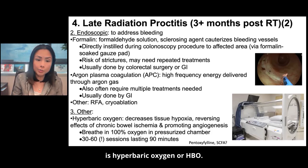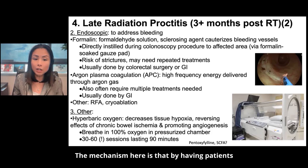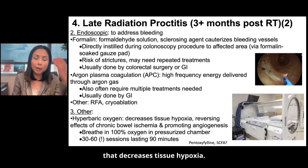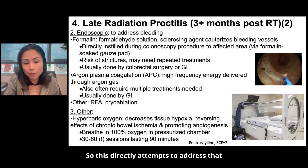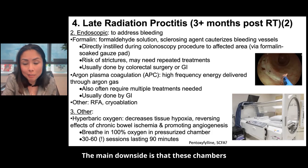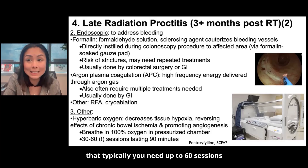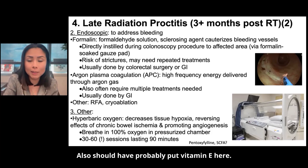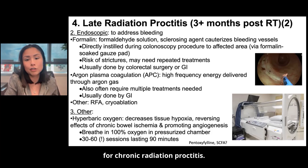There are other endoscopic methods like RFA and cryoablation. The last thing I want to talk about is hyperbaric oxygen. The mechanism is that by having patients breathe in 100% oxygen, that decreases tissue hypoxia — and since chronic radiation proctitis is really mediated by ischemia, this directly addresses that and promotes angiogenesis. The main downside is that chambers are not widely available, and it's resource and time intensive — typically up to 60 sessions each about an hour and a half. Pentoxifylline, short-chain fatty acids, and vitamin E are also listed as possible treatments for chronic radiation proctitis.